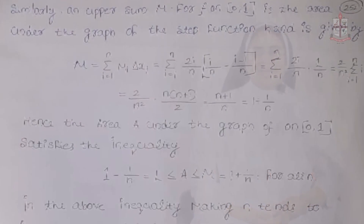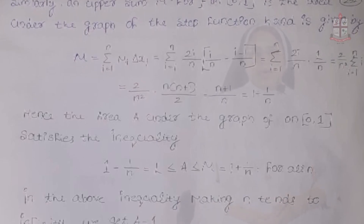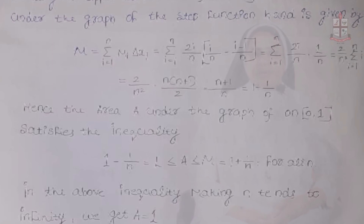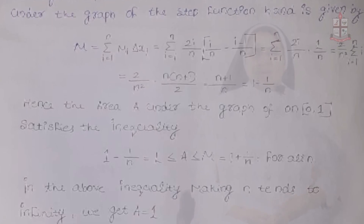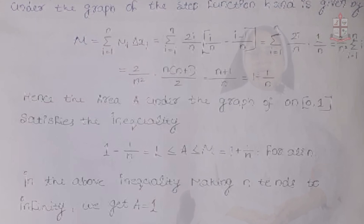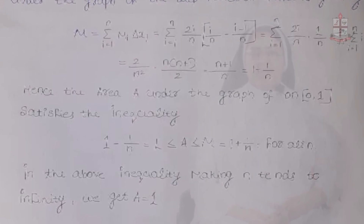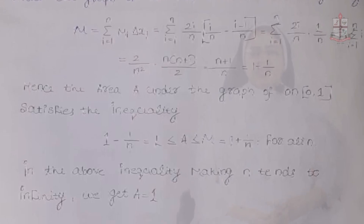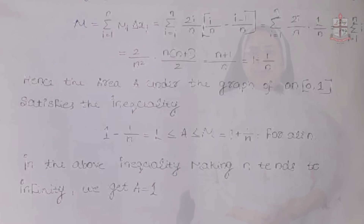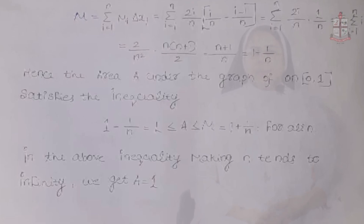For the upper sum M on [0, 1], the area under the step function is given by M = Σ(i=1 to n) Mᵢ·Δxᵢ = Σ(i=1 to n) [2i/n · (1/n)] = (2/n²) Σ(i=1 to n) i = (2/n²) · n(n+1)/2. This simplifies to (n+1)/n, giving the final upper sum M = 1 + 1/n.